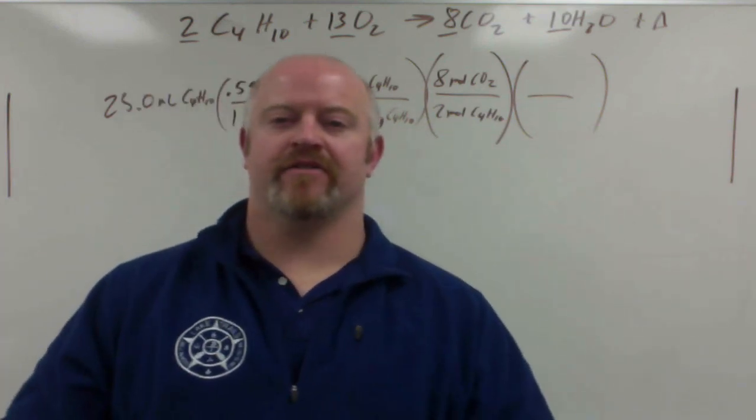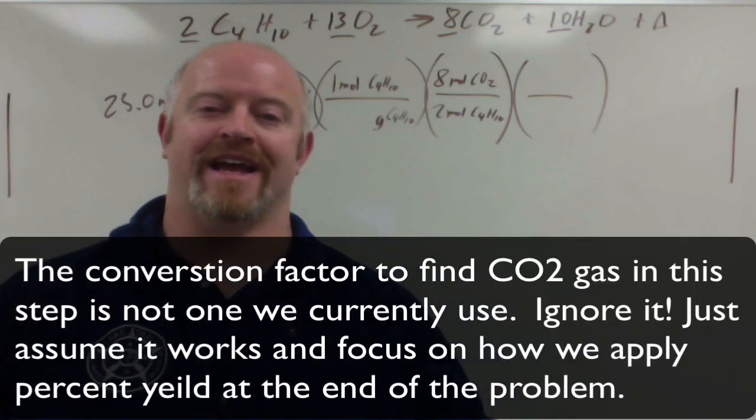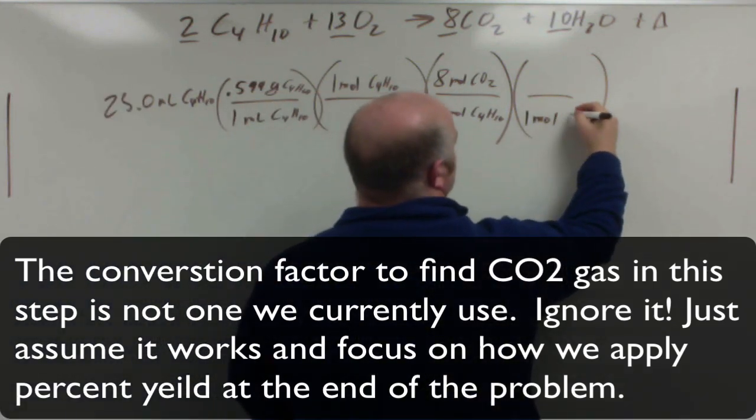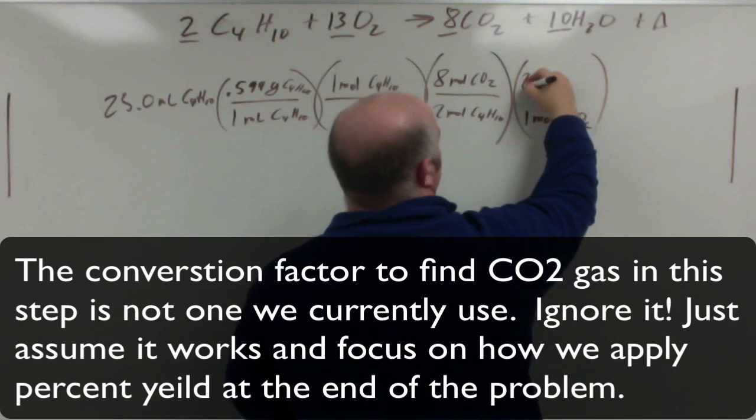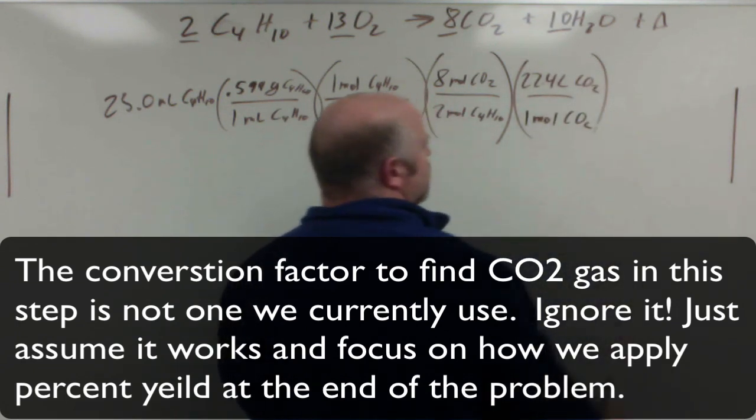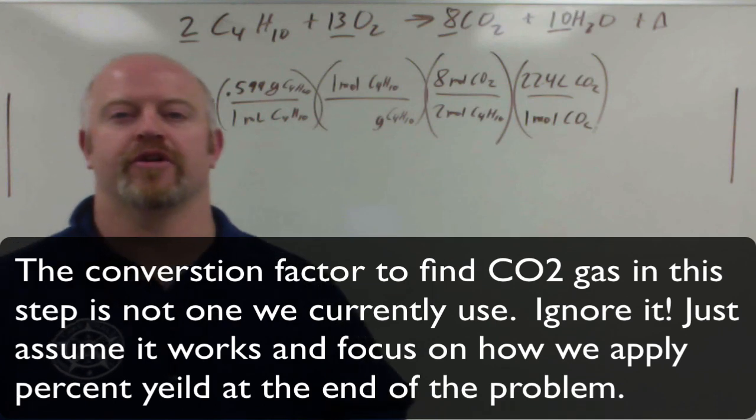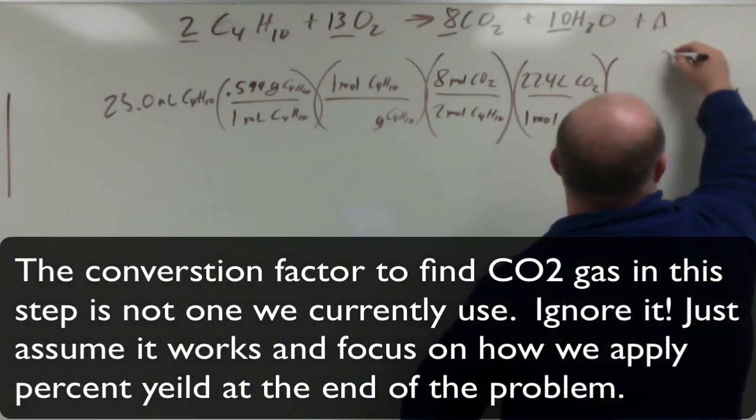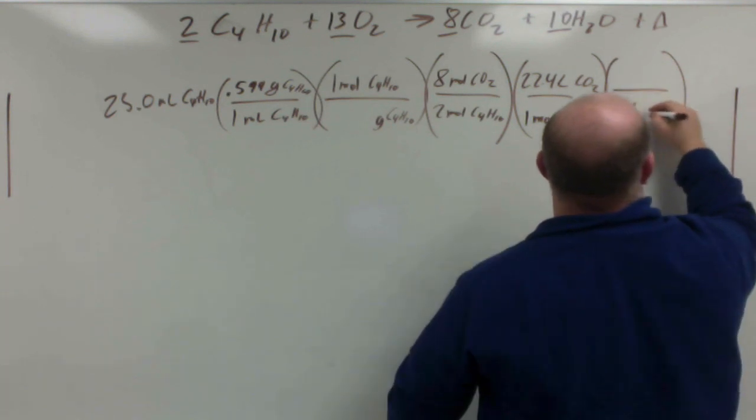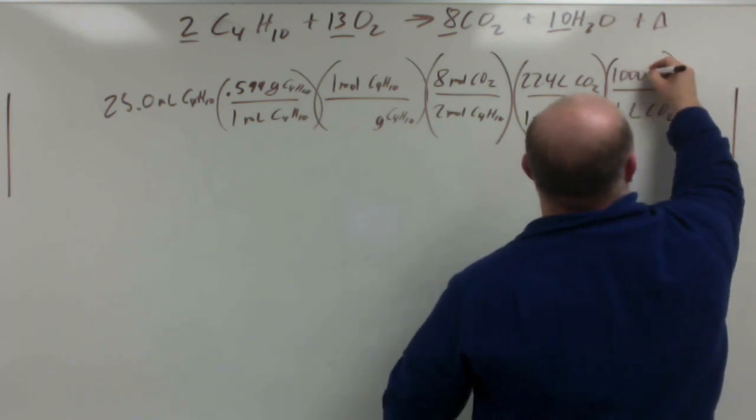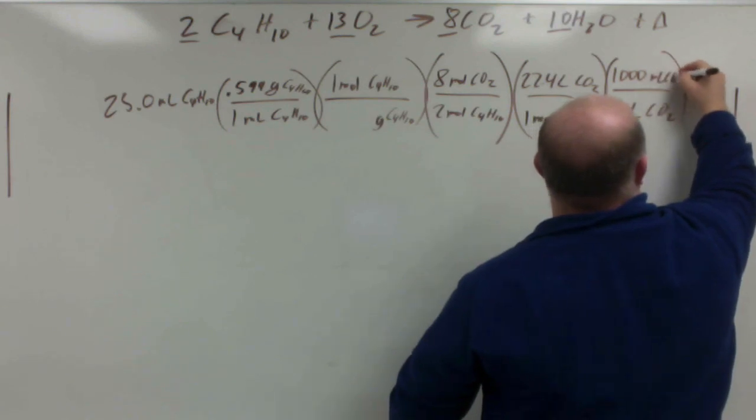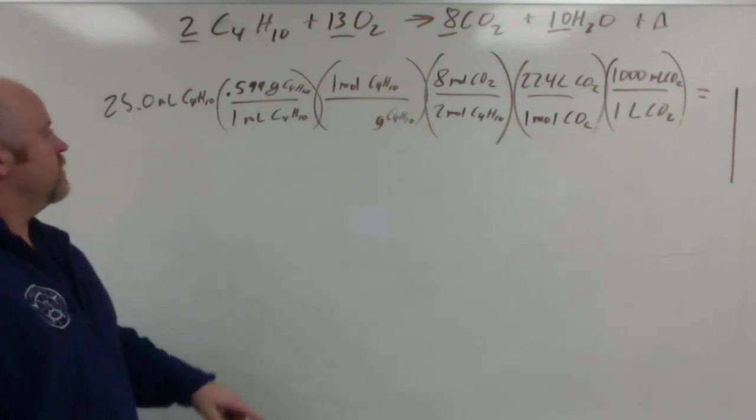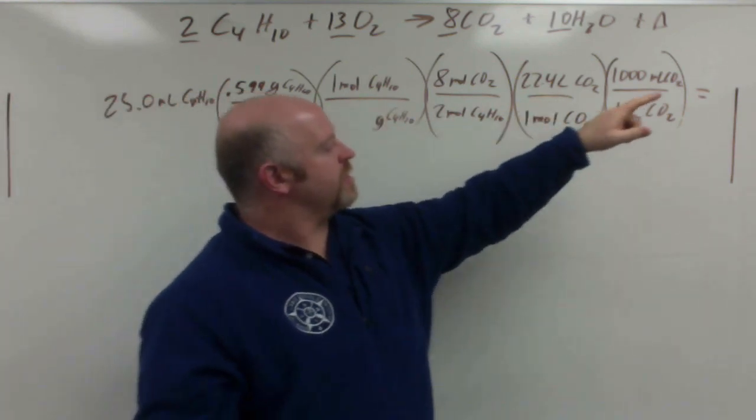And finally, the problem says I have carbon dioxide gas at STP, so I know that for every one mole of CO2 I get 22.4 liters of CO2. But the question asked me for it in milliliters, so I have liters. So my last step, for every one liter of CO2 I get 1000 milliliters of CO2.